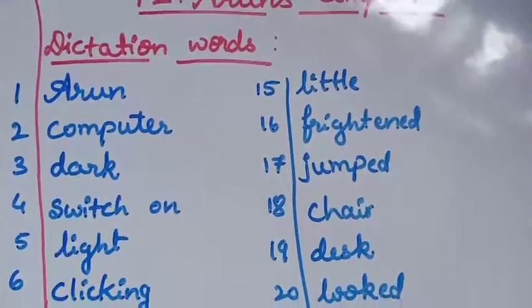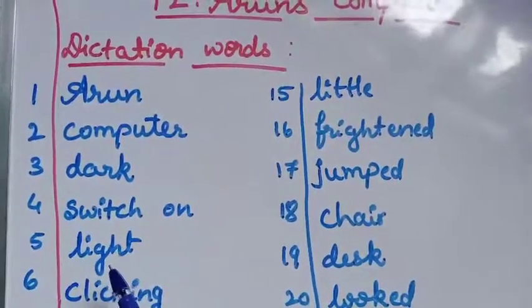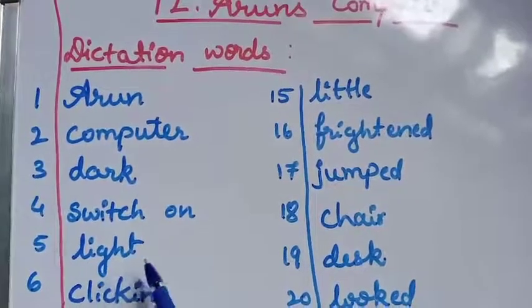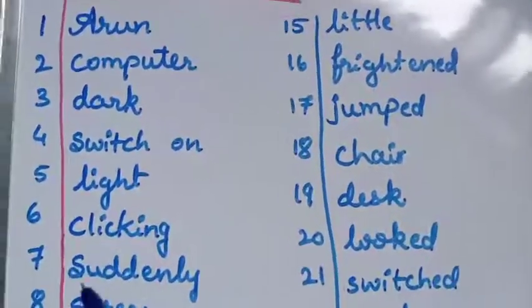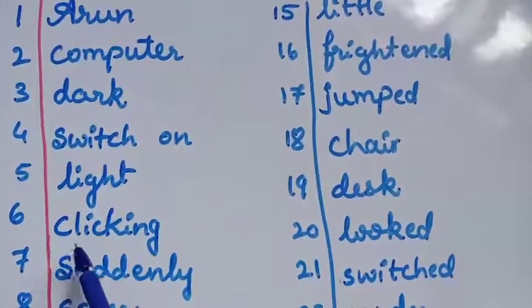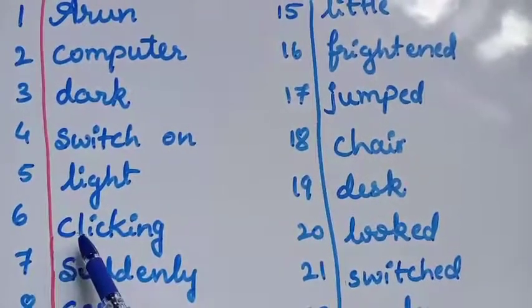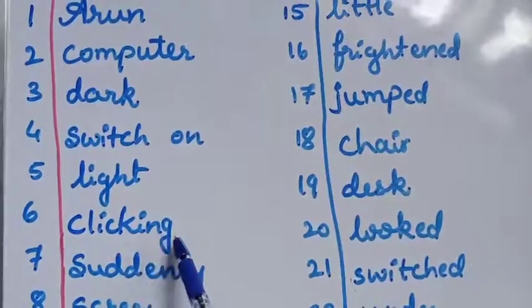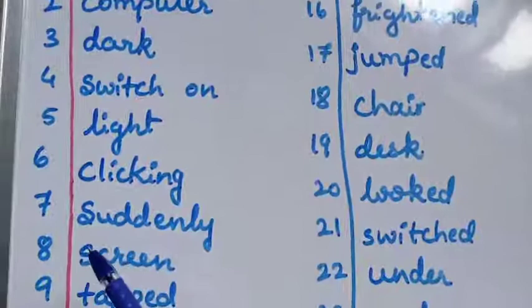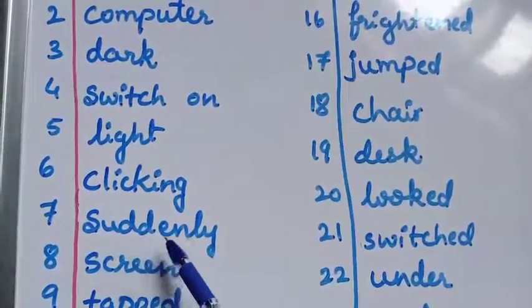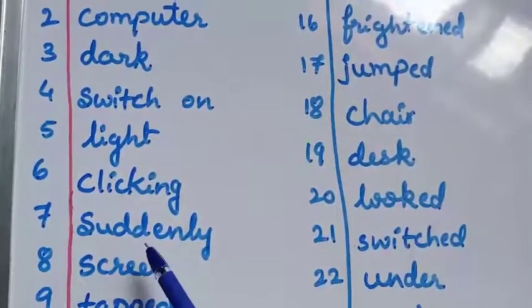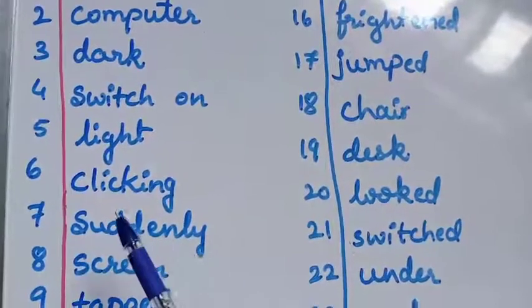Next, number 5. Light. L-I-G-H-T Light. L-I-G-H-T Light. Number 6. Clicking. C-L-I-C-K-I-N-G Clicking. C-L-I-C-K-I-N-G Clicking. Number 7. Suddenly. S-U-T-T-E-N-L-Y Suddenly. S-U-T-T-E-N-L-Y Suddenly.